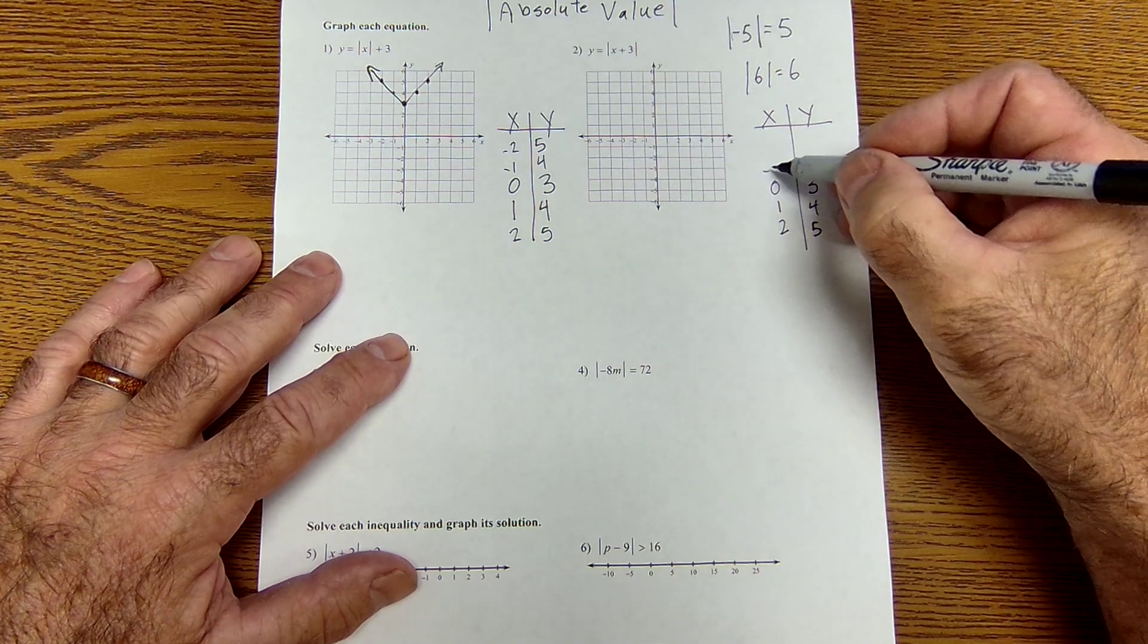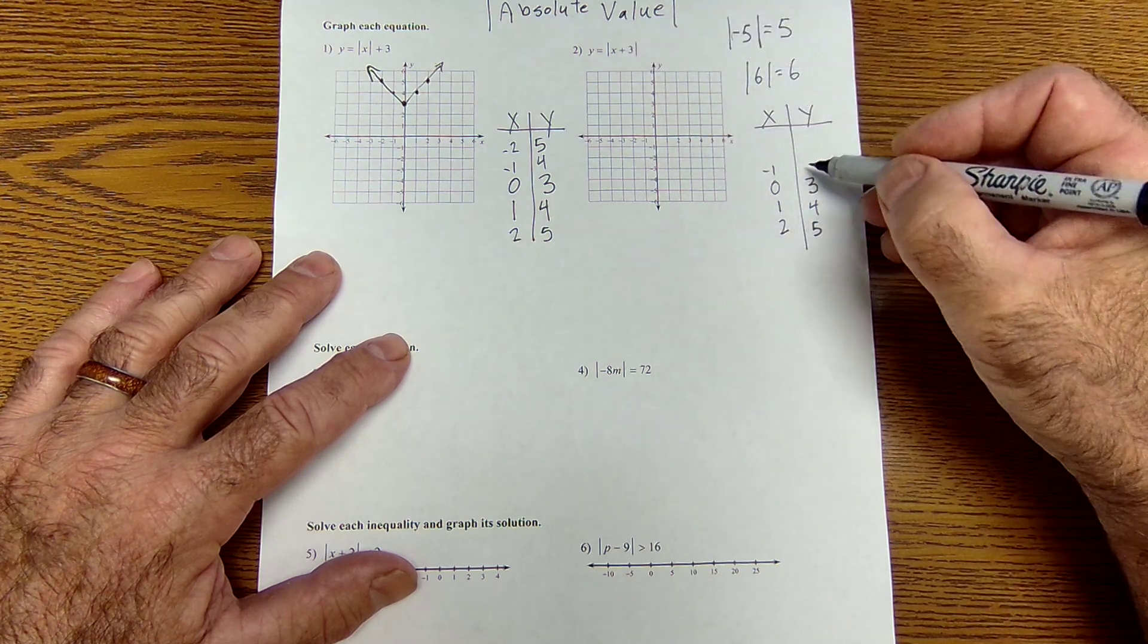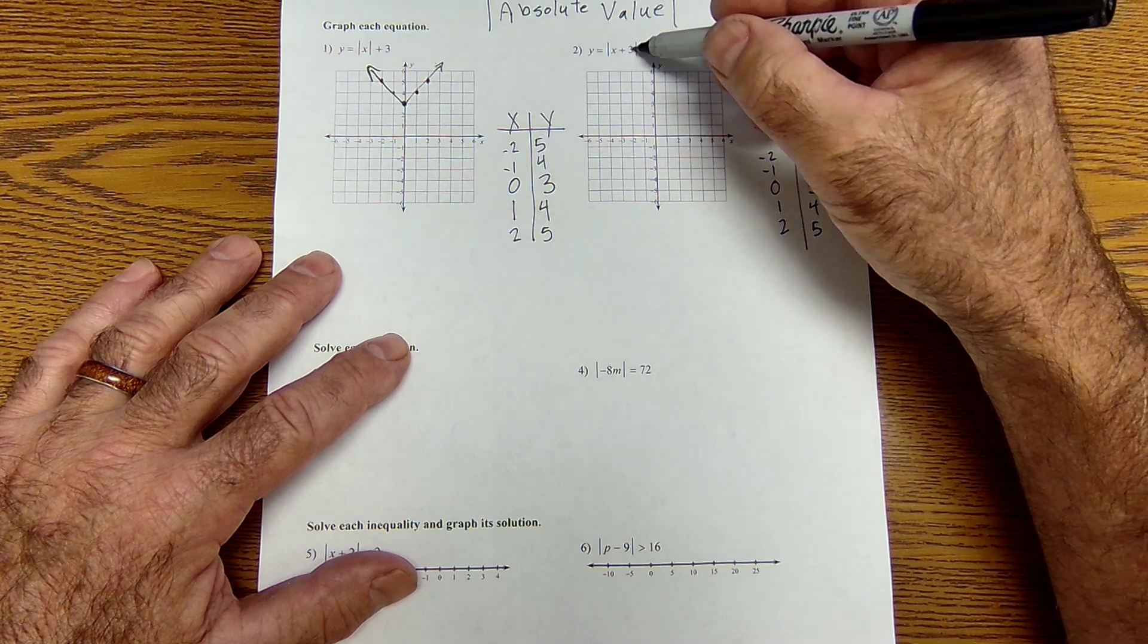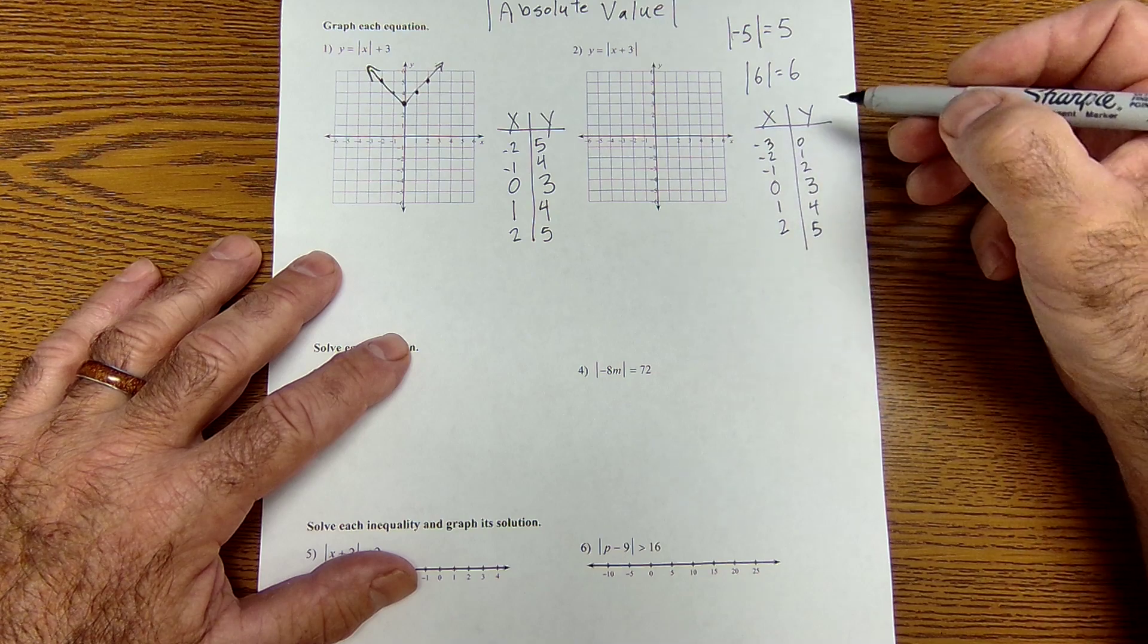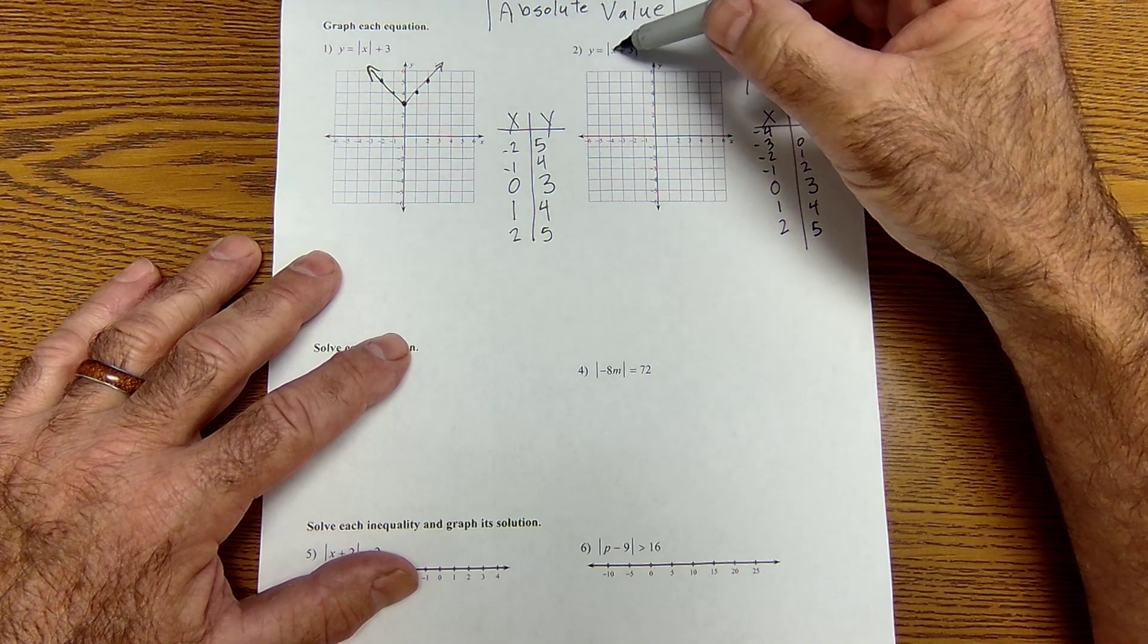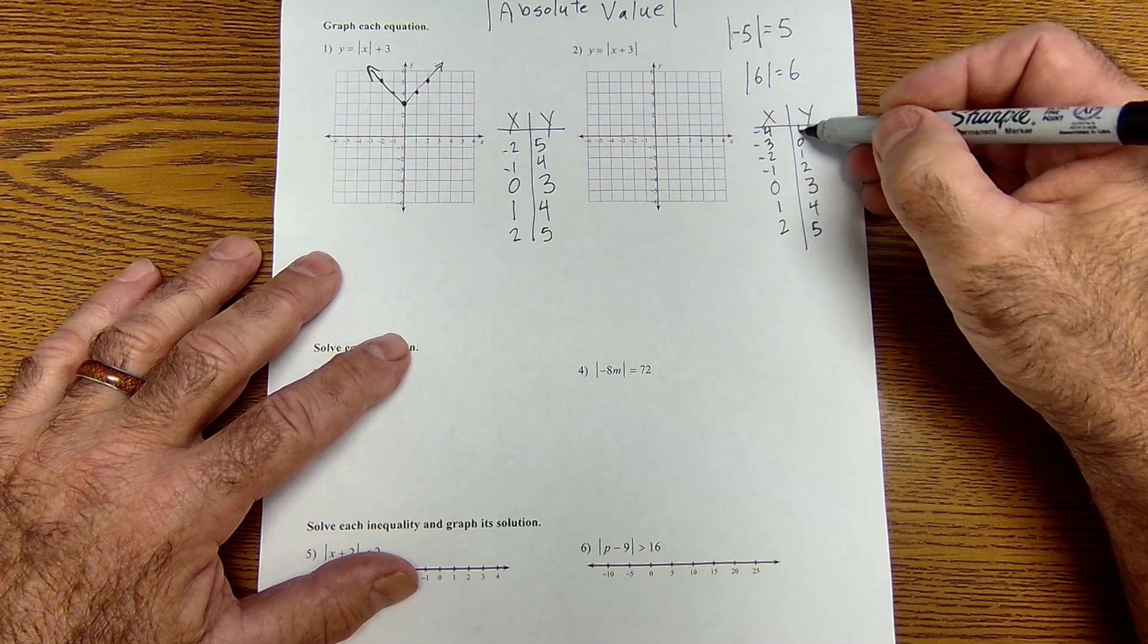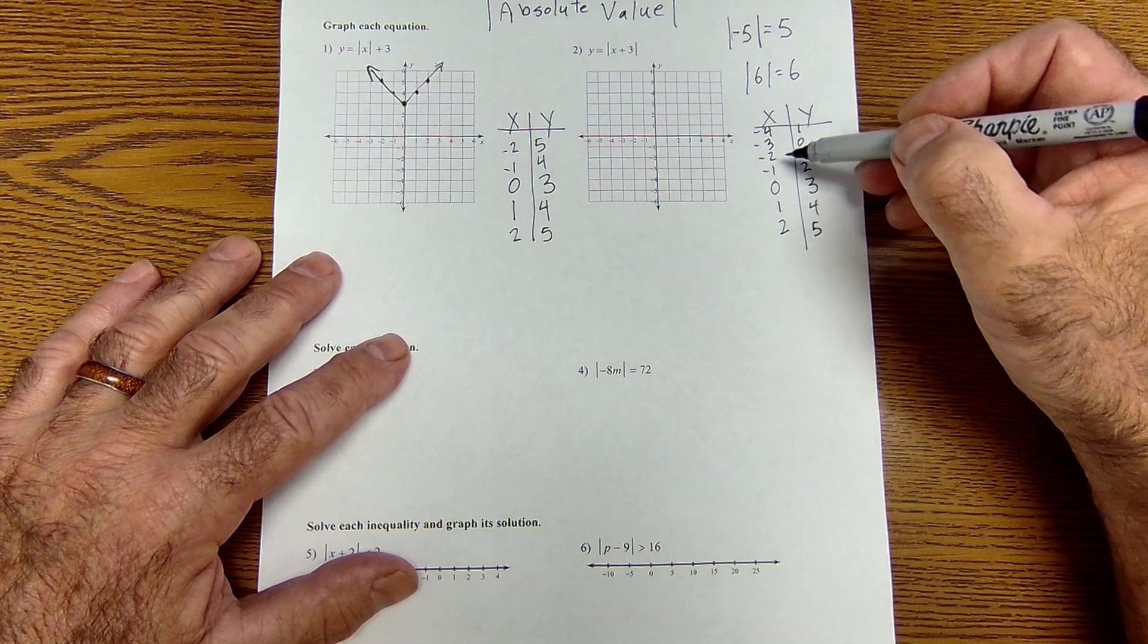Well, let's try some negatives now. Negative 1 plus 3 is 2. Absolute value is 2. Negative 2 plus 3 is 1. Negative 3 plus 3 is 0. And now that's where the absolute values are going to come into play.